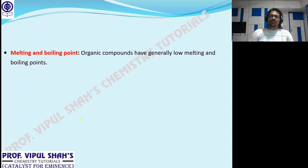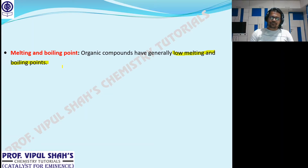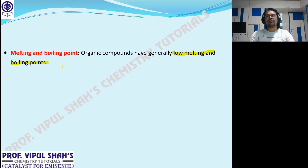Next: melting and boiling points. Organic compounds generally have low melting and boiling points. Why? I told you they generally form covalent bonds — so why do they have low melting and boiling points? Because of weak intermolecular forces of attraction.